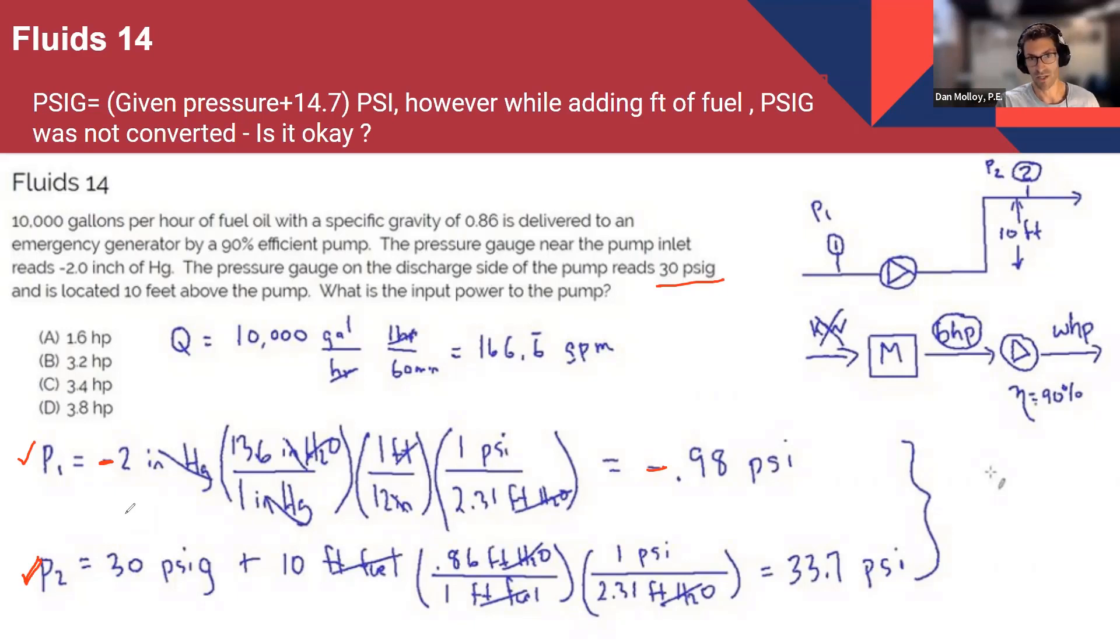So that's how we know it's a gauge. The other way that we know is that it says a pressure gauge near the pump inlet reads minus two inches. So if it's read off a gauge, then it's the gauge pressure. So it's not meant to be cryptic.